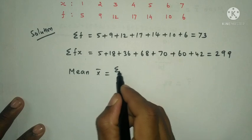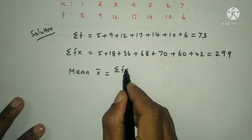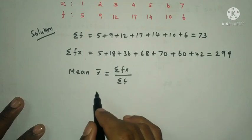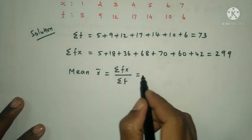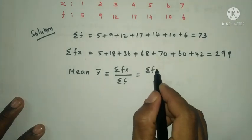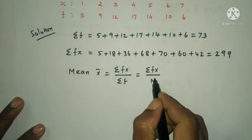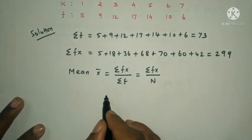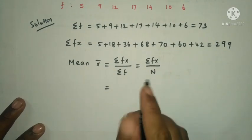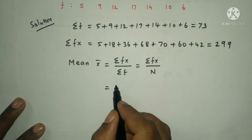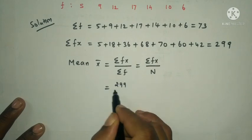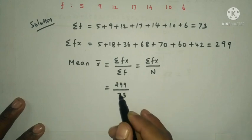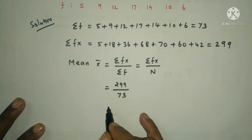Mean formula: x̄ = Σfx / Σf = Σfx / N, where N = Σf. So x̄ = 299 / 73 = 4.09. The mean x̄ = 4.09.